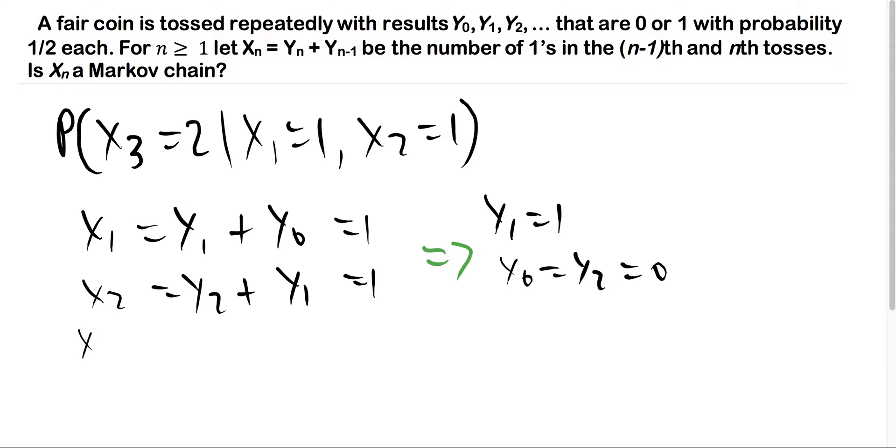Moving on to x3, this equals y3 + y2 = 2. However, we know y2 = 0, so this means y3 = 2, which is impossible since the yi's can only be 0 or 1. Therefore, this happens with probability 0.